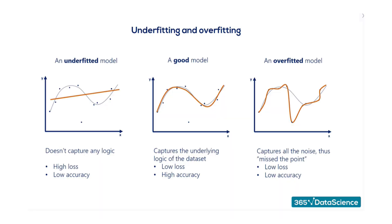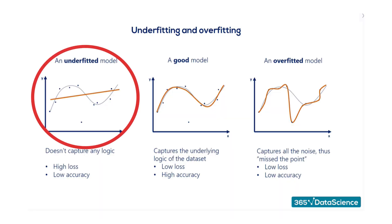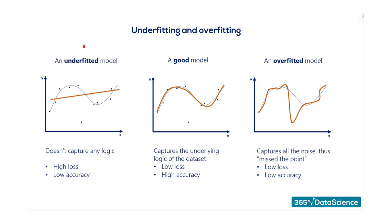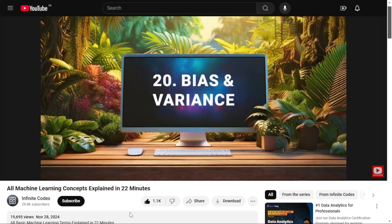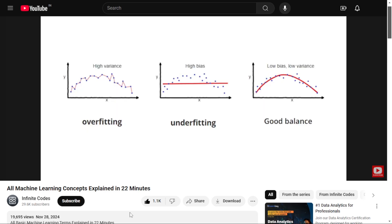Underfitting is the opposite — your model is too simple to capture important patterns. It performs poorly even on training data, like trying to fit a straight line to curved data. The balance lies in model complexity and training time and is at the core of machine learning. I talk about the importance of the bias-variance trade-off in other videos — check them out.